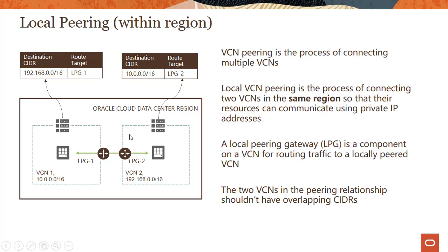There are a couple of important things to understand — these also come up in exams. The first is that the two VCNs in the peering relationship cannot have overlapping CIDRs. If you have an overlapping CIDR, for example 10.0.0.0/24 which is a subset of /16, you will not be able to establish a peering connection.